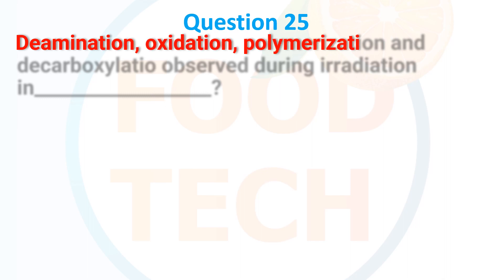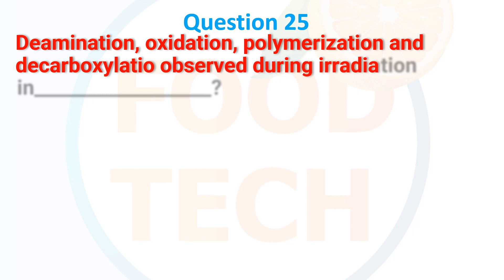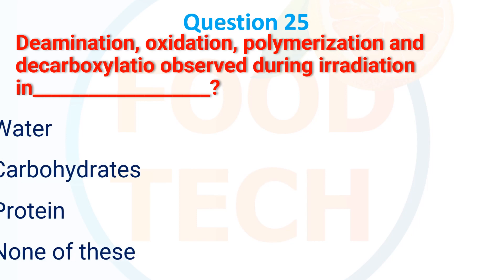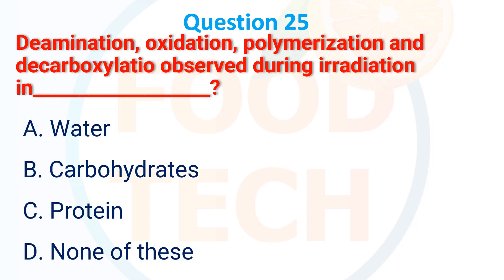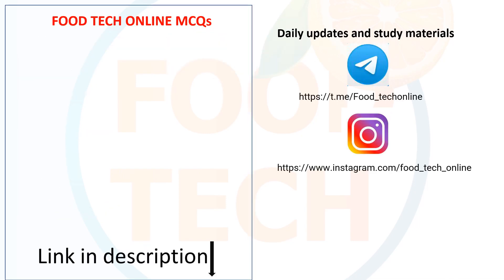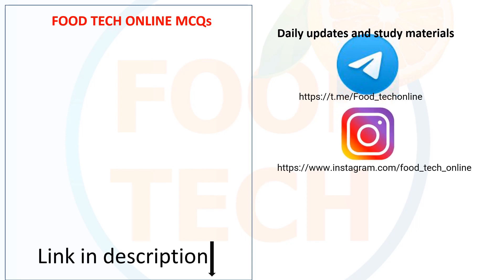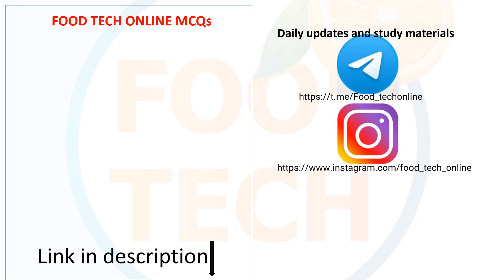Deamination, oxidation, polymerization, and decarboxylation observed during irradiation occurs in: A. Water, B. Fat, C. Protein, D. None of these. The correct answer is C: protein. For more videos, link in description. For daily updates and study material, join our Telegram and Instagram. Please subscribe to our channel, share with your friends. Thank you.